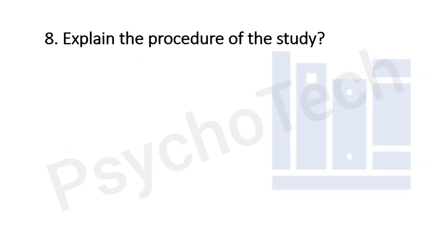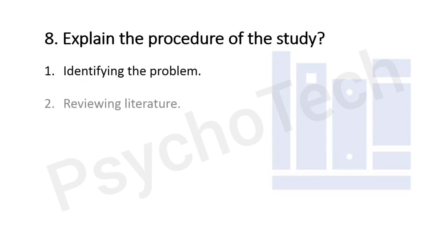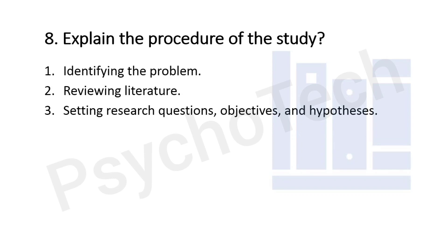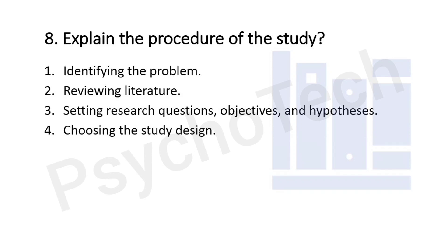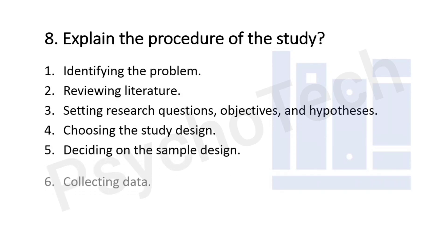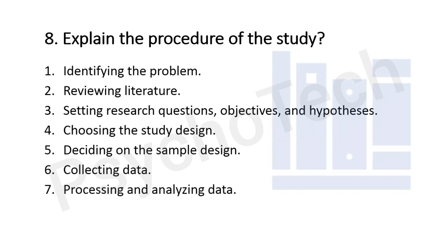The next question is: explain the procedure of a study. To answer this, you need to mention all the steps involved in the research process. There are eight steps: first, identifying the problem; second, reviewing literature; third, setting research questions, objectives, and hypothesis; fourth, choosing the study design; fifth, deciding on the sample design; sixth, collecting data; seventh, processing and analyzing data; and eighth, writing the report.